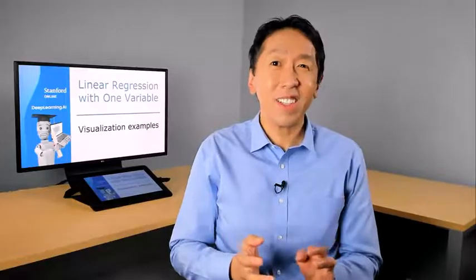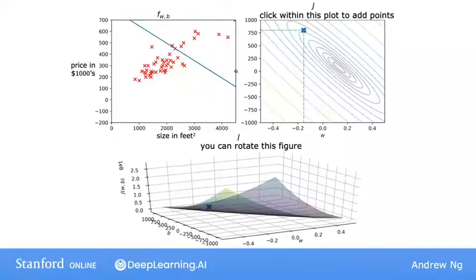Let's look at some more visualizations of W and B. Here's one example. Over here, you have a particular point on the graph J.